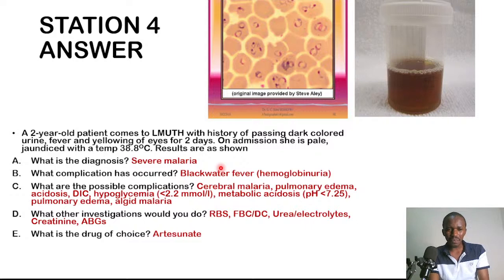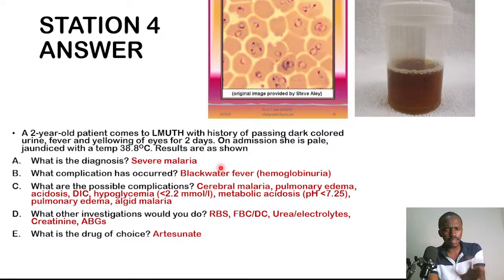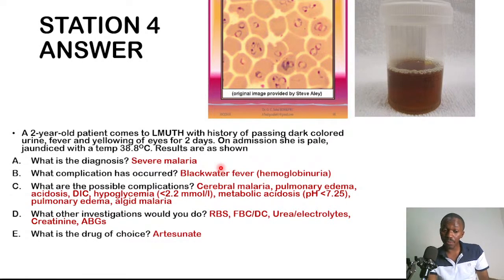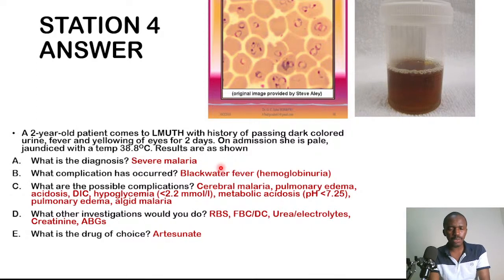Investigations: random blood sugar, full blood count with differentials (gram-negative organisms are associated with severe malaria, so antibiotics are often added), urea/electrolytes/creatinine (to rule out acute kidney injury from blackwater fever), and arterial blood gases (to demonstrate metabolic acidosis). Drug of choice: artesunate. There is debate about dosing — children under three may receive up to 3 mg/kg; older children typically receive 2.4 mg/kg. Follow your lecturer's specified dosage.